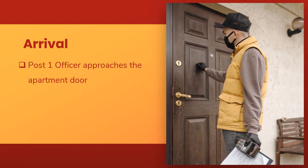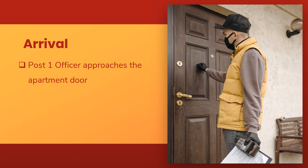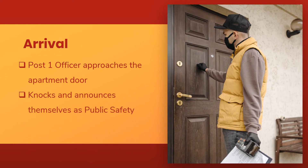Arrival: Post One Officer approaches the apartment door, knocks, and announces themselves as public safety. Knocking first is extremely important, as the dormitory or room is a private space and the officer should endeavor not to surprise any occupants with their arrival. The officer then requests permission for entry. If entry is granted verbally or by someone opening the door, Post One Officer can enter the area.